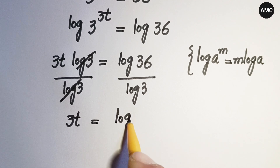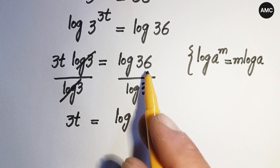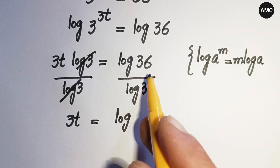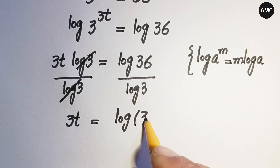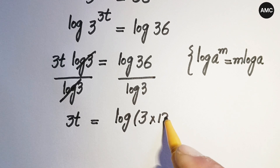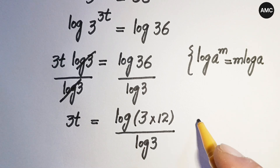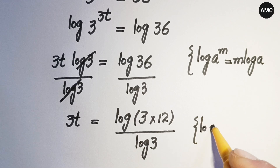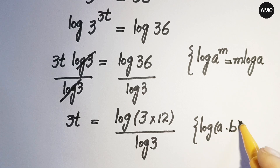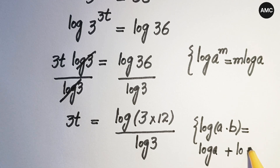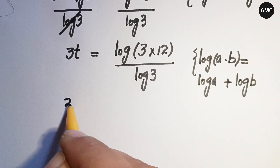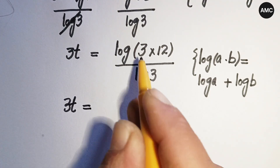We can write 36 in prime factors as 3 times 12, so we have 3t equals log of 3 times 12 all over log 3. Now applying the logarithm product law — log of a times b equals log a plus log b — so 3t is equal to log 3 plus log 12, all over log 3.